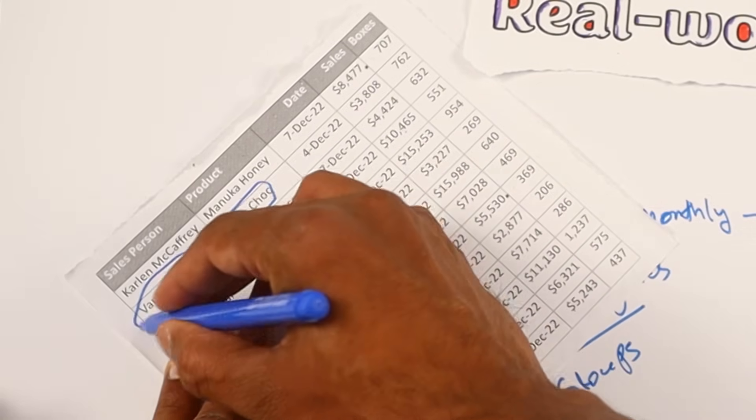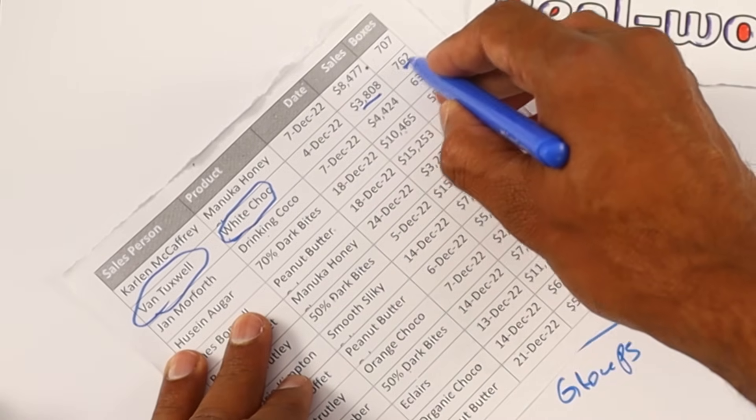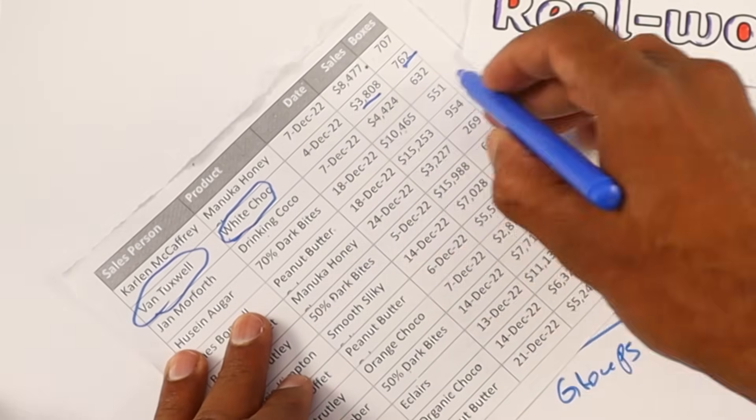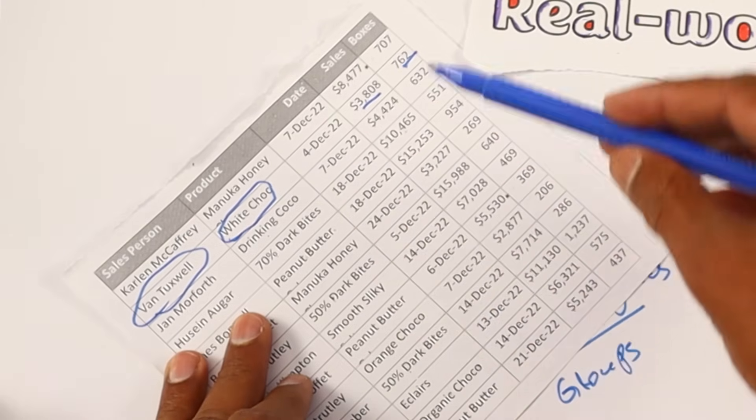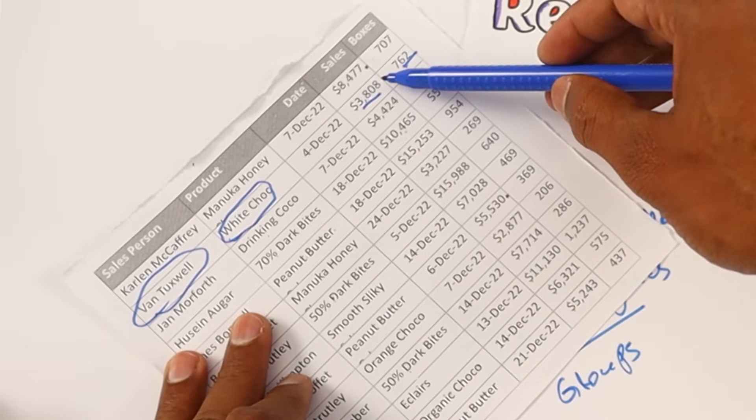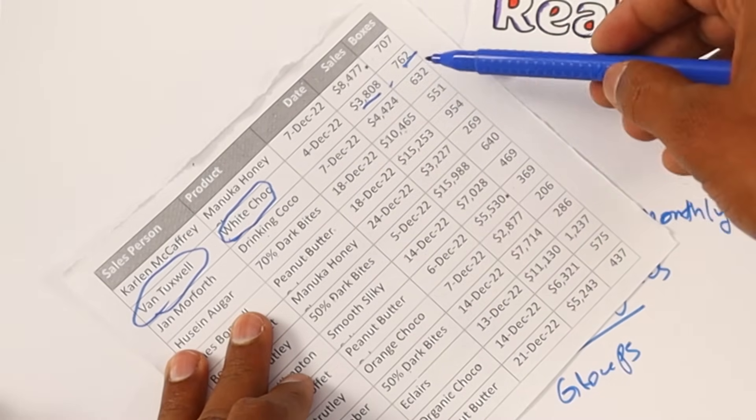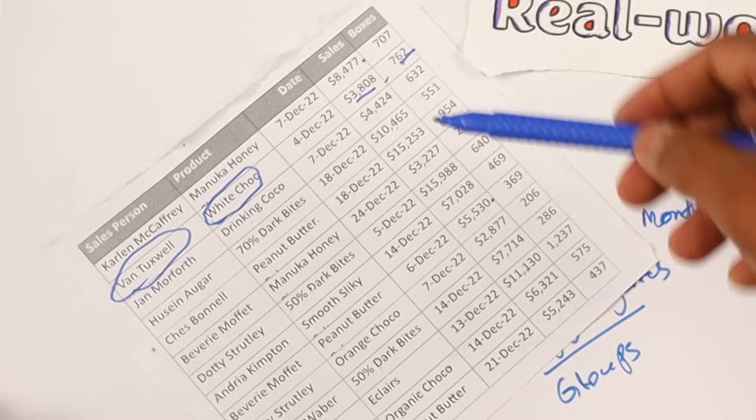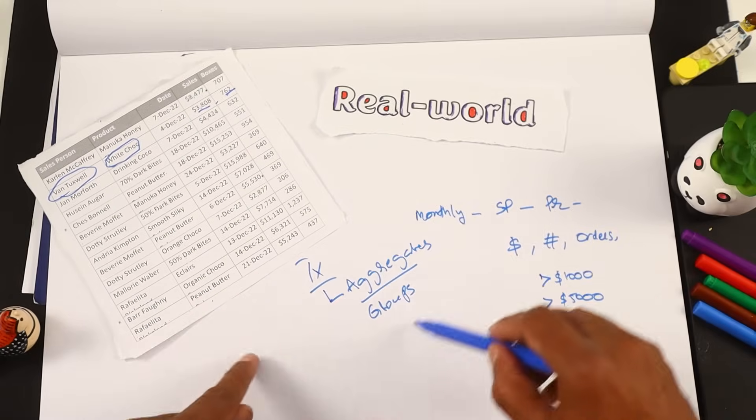For example, for a specific product like white chocolate for Van Tuxwell, what was the total volume of sales? How many boxes are there? How many shipments have happened? Each line is one shipment and how many sales had more than 1000 and how many more have more than 5000. So that's the kind of thing that we want to do in the transformation.